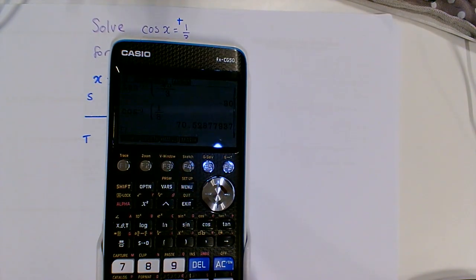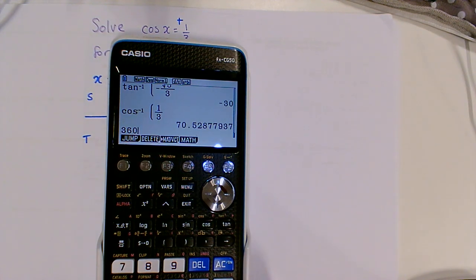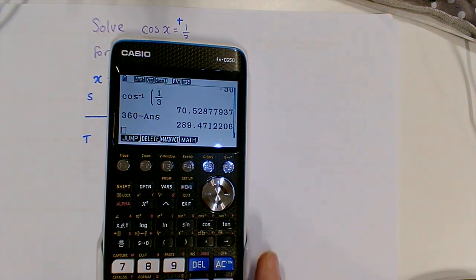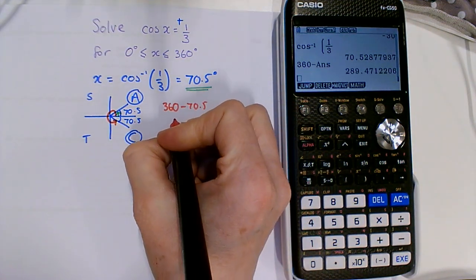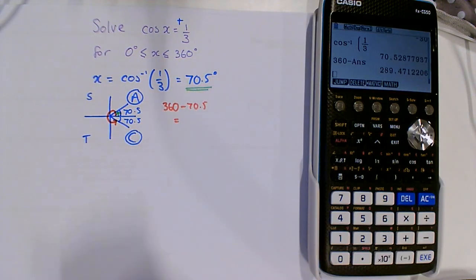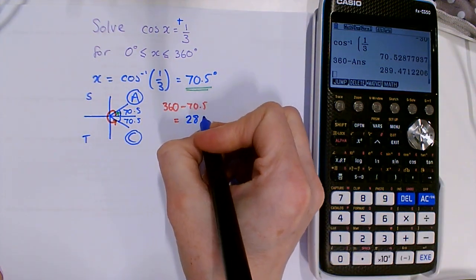We can see that this red angle would be 360 minus 70.5. Using my calculator, 360 minus my answer gives 289.47°, which is 289° to three significant figures.